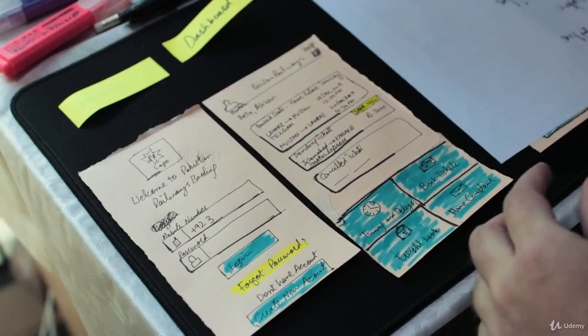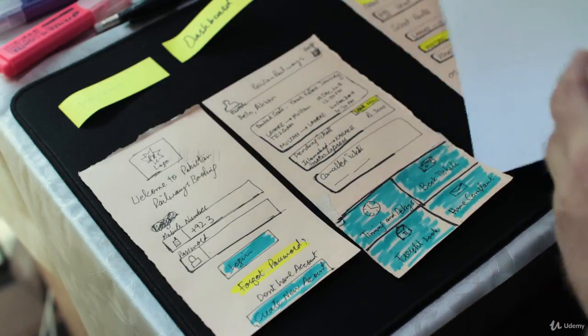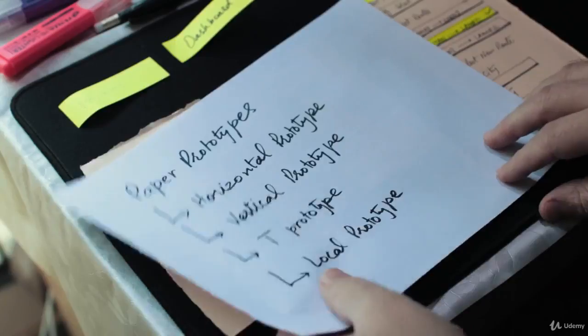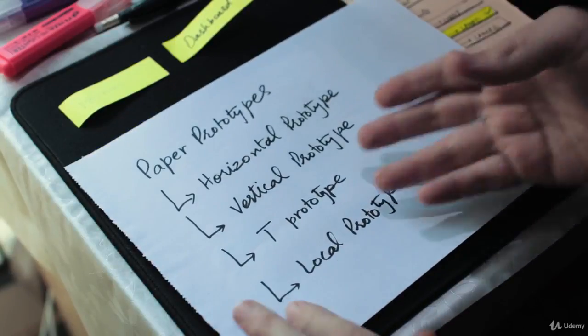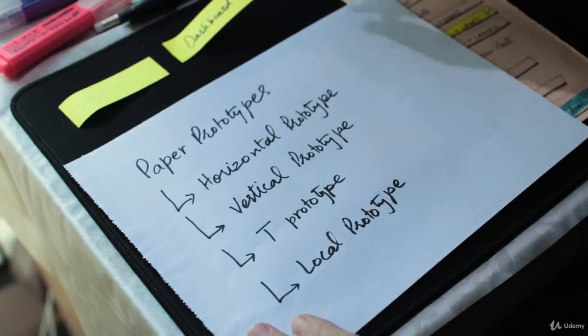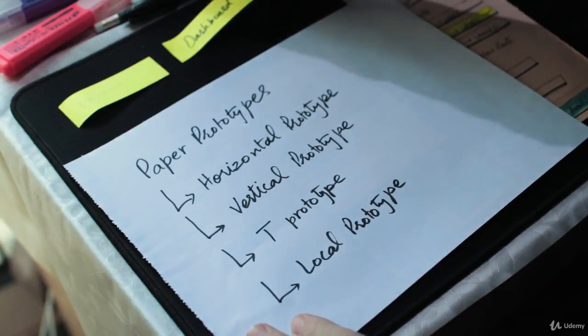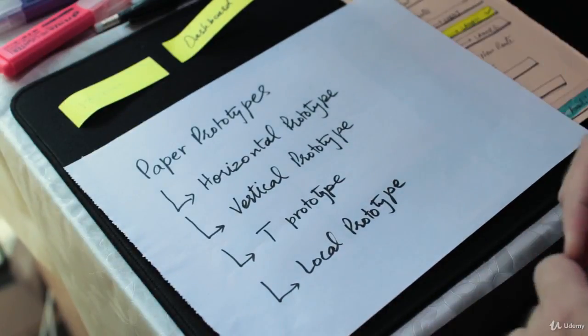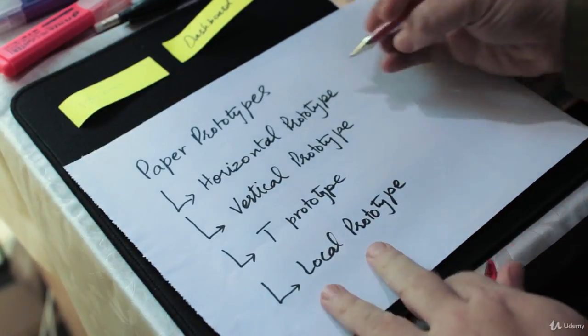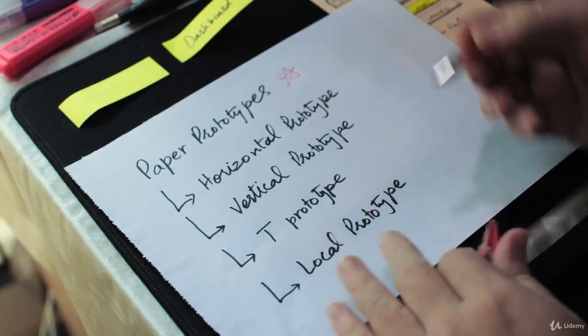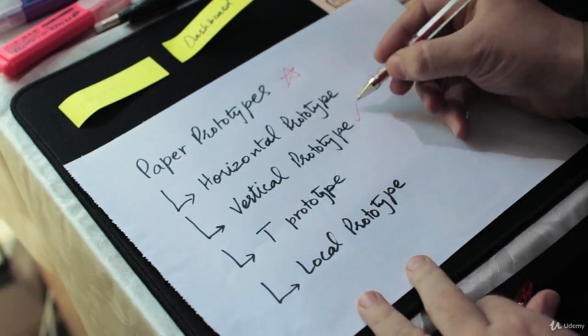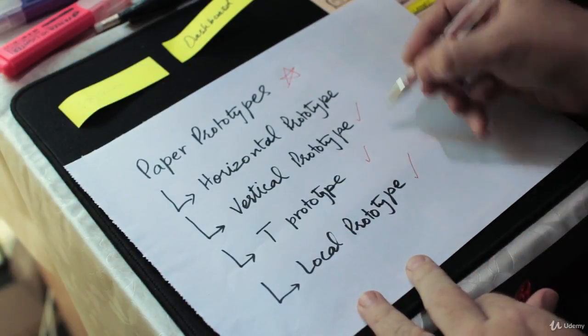So that covers paper prototypes, horizontal prototypes, vertical prototypes, T prototypes, and local prototypes. We have covered all of them, so let's move on to the next lesson.